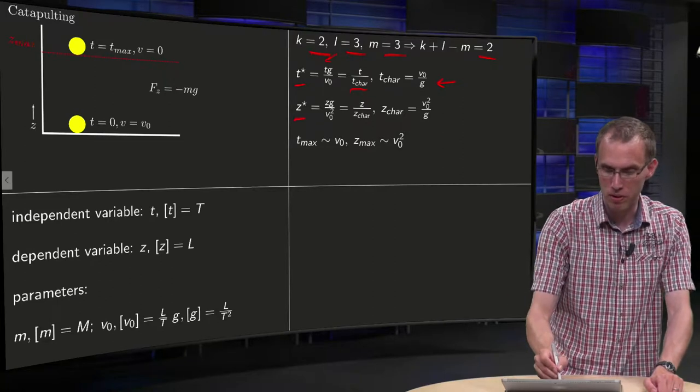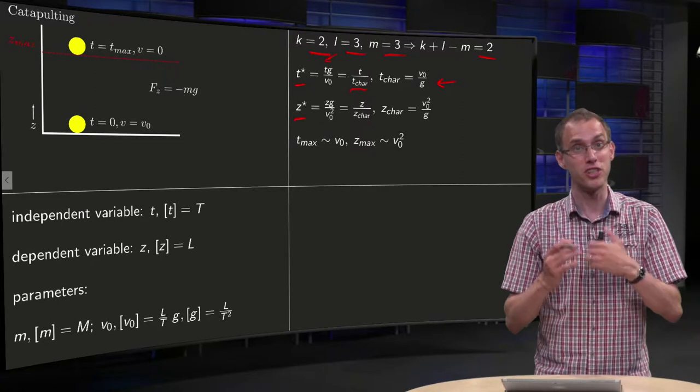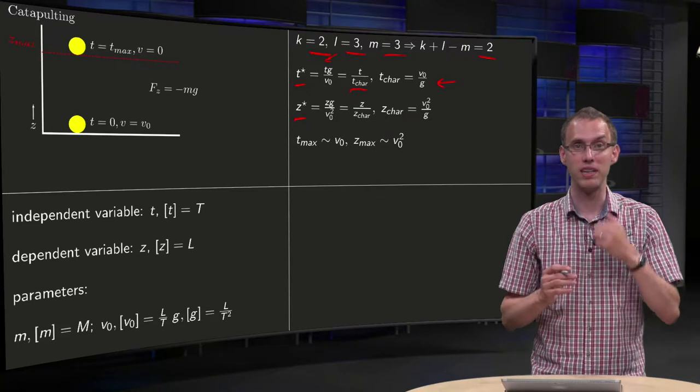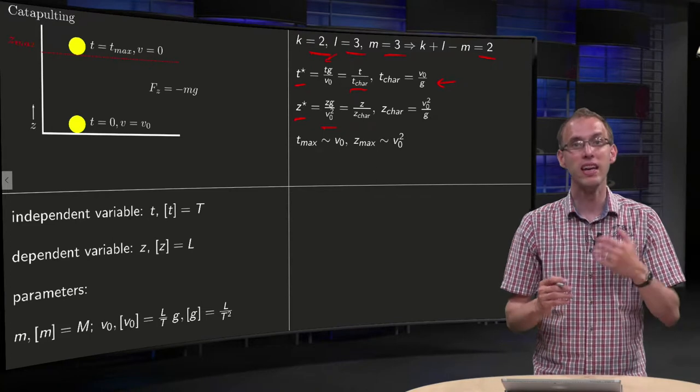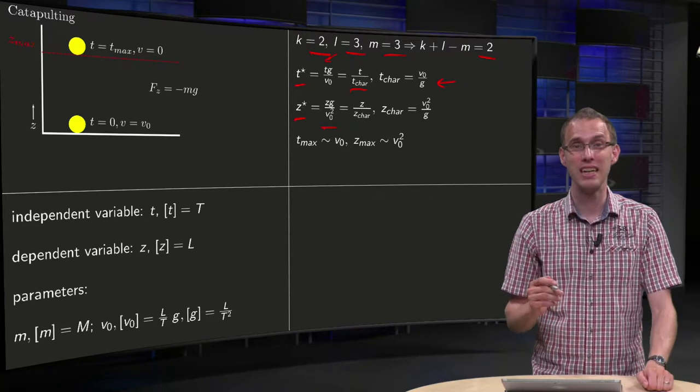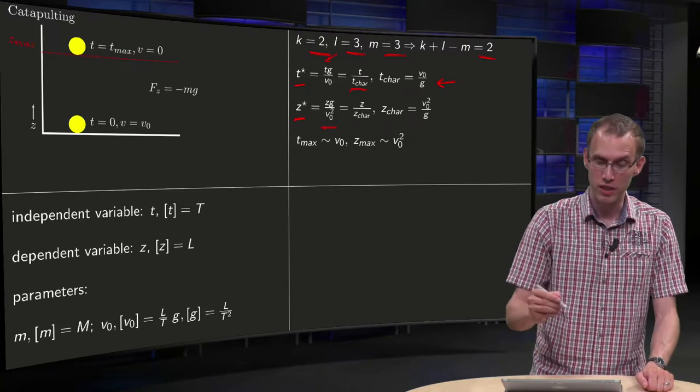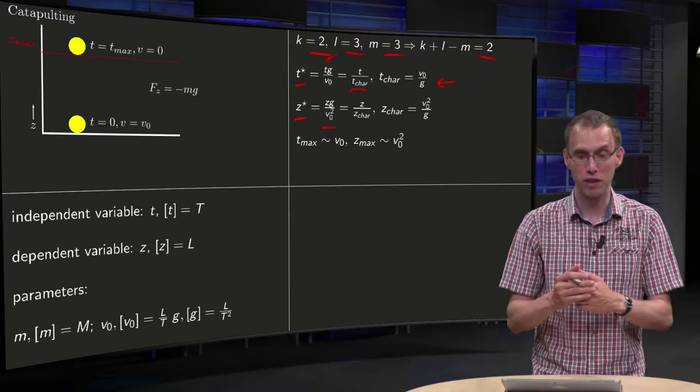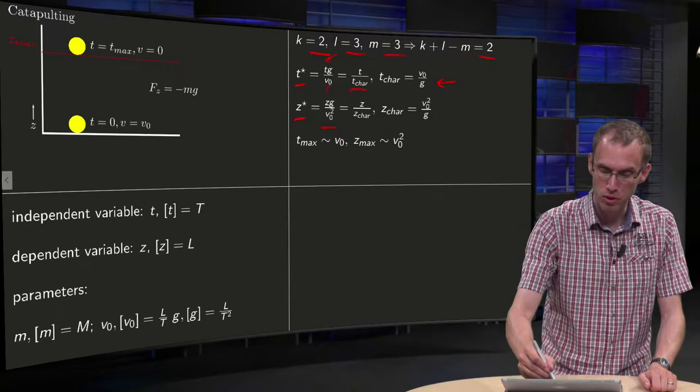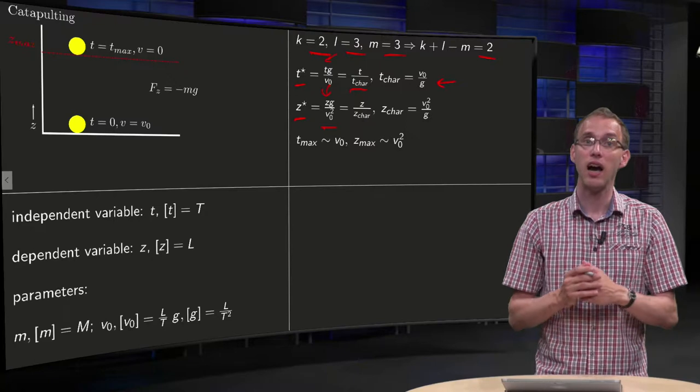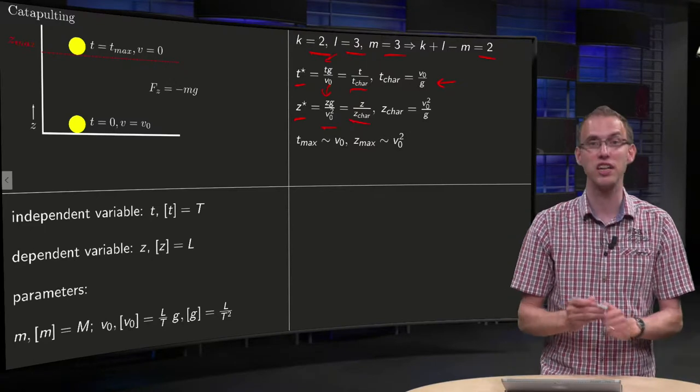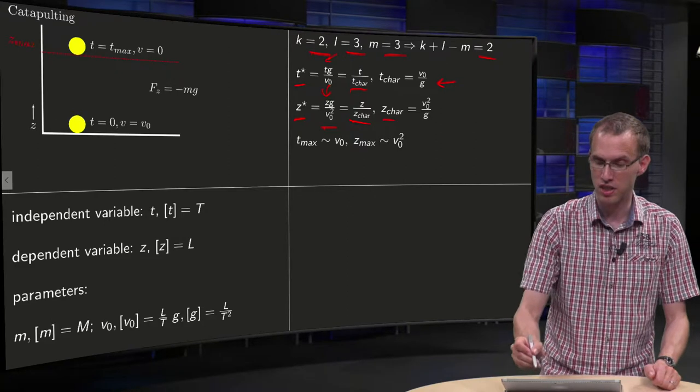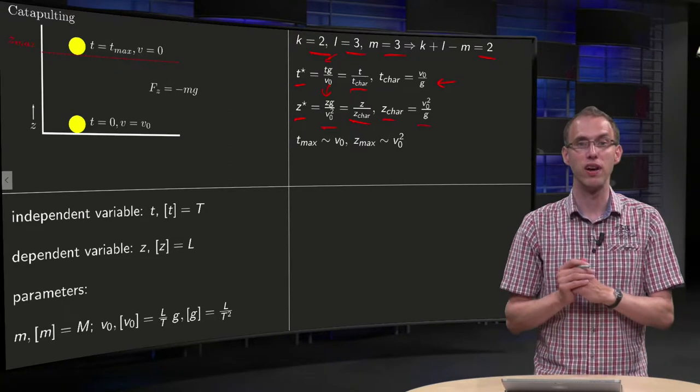Something similar can be done for z*. You can form a second dimensionless quantity by taking z times g over v0 squared. What we actually have then is the z*, which is a dimensionless spatial variable, because it is proportional to our z. We actually have z* equals z over z_char, where in this case z_char equals v0 squared over g.